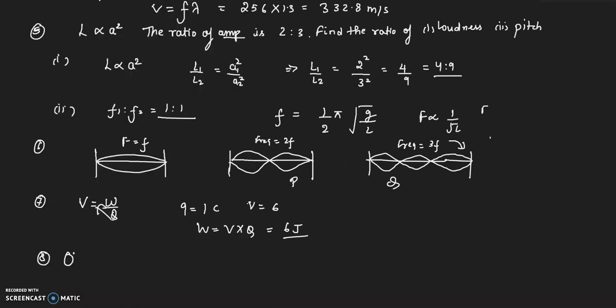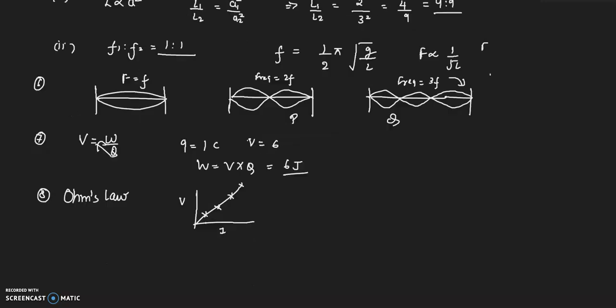Then we move on to Ohm's law, a very very important topic, and then the graph for a metallic conductor, that is the V versus I graph. It is like this. Then the factors on which resistance of a conductor depends.